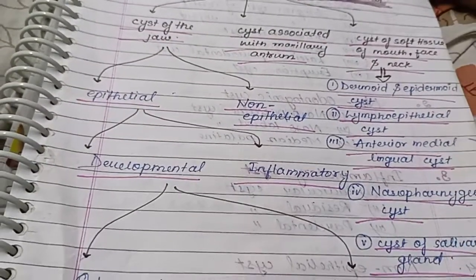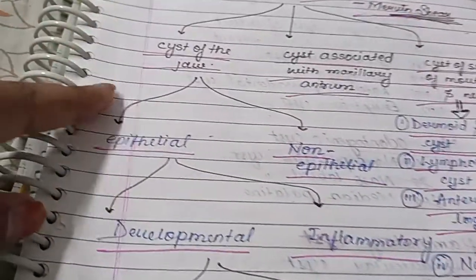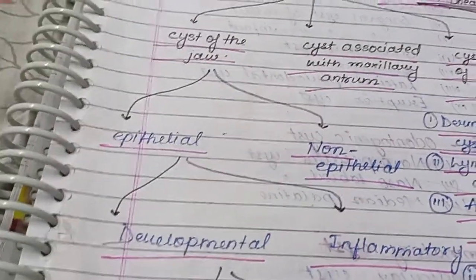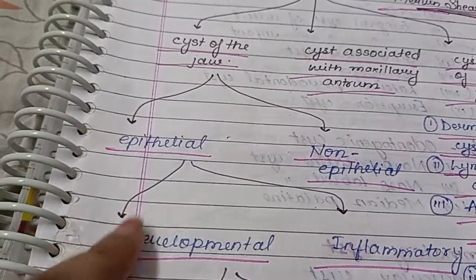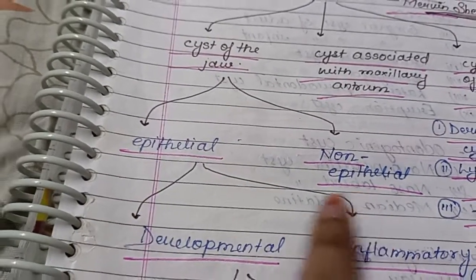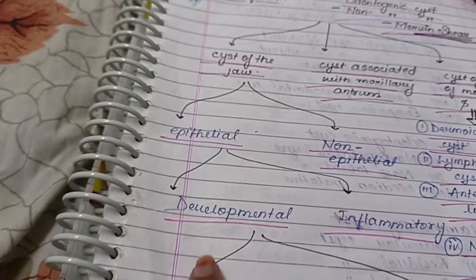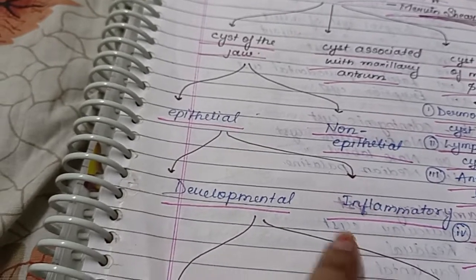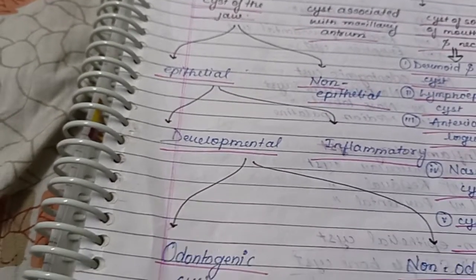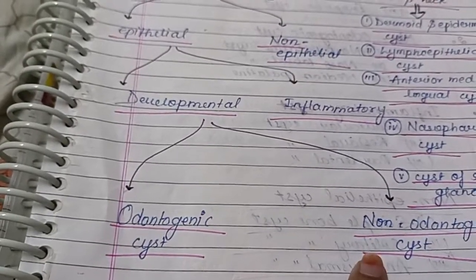We will discuss all these topics one by one. First, cysts of the jaw. Cysts of the jaw are divided into epithelial and non-epithelial. Epithelial is further divided into developmental and inflammatory. Developmental is further divided into odontogenic cysts and non-odontogenic cysts.